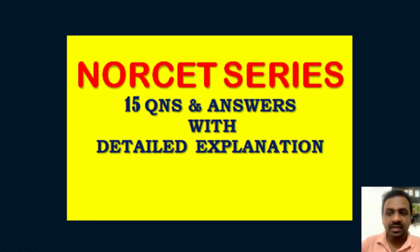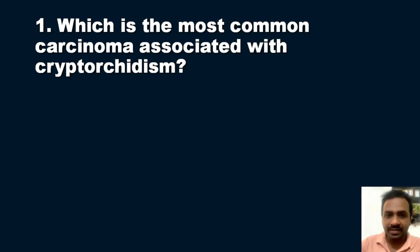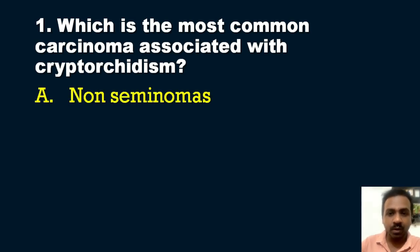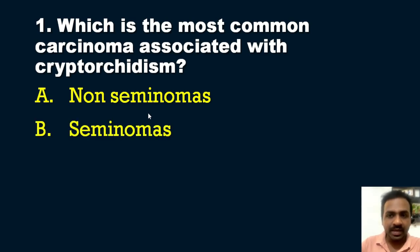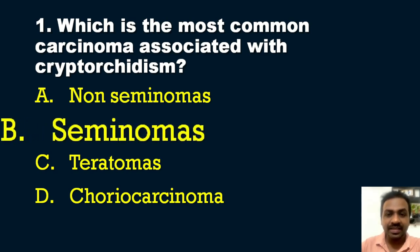The first question is: which is the most common carcinoma associated with cryptorchidism? Cryptorchidism means an undescended testis, which can lead to chances of malignancy. The options are: A) non-seminomas, B) seminomas, C) teratomas, and D) choriocarcinoma. The answer is option B, seminomas.